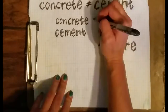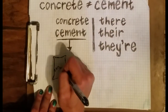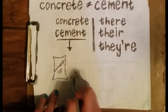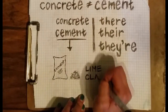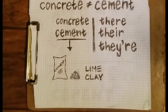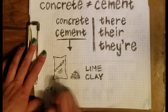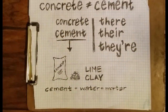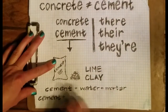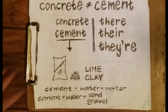Cement is a powdered mixture that is generally white or gray in color and comes in a large 50-pound bag. It's made of lime and clay. When you mix cement and water, you get mortar. When you mix cement, water, and sand or gravel, you get concrete.